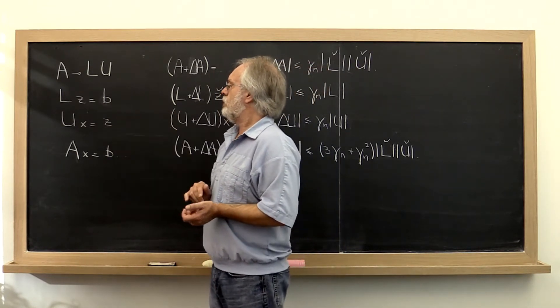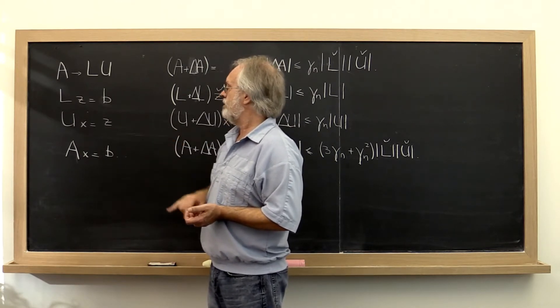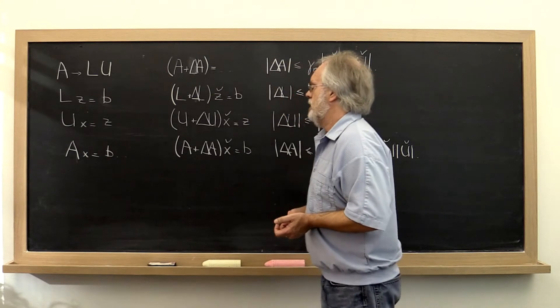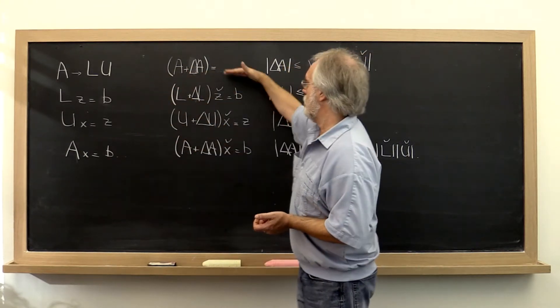Once you do that, you solve a lower triangular system, an upper triangular system, and together then you have solved Ax equals b. So for each of these steps there is an error result.